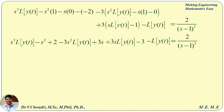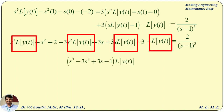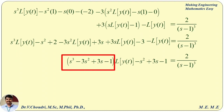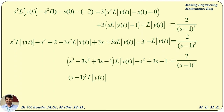Taking L{y(t)} as a common factor: (s³ − 3s² + 3s − 1)·L{y(t)} and the non-common terms −s² + 3s − 1 equal 2/(s−1)³. Since s³ − 3s² + 3s − 1 = (s−1)³, we get (s−1)³·L{y(t)} = 2/(s−1)³ + s² − 3s + 1.